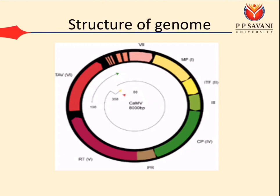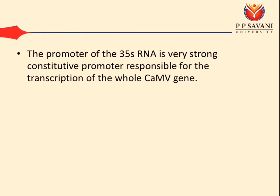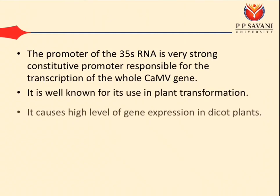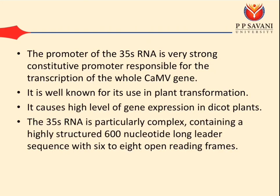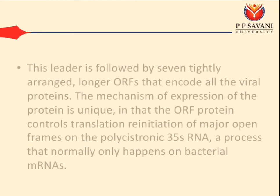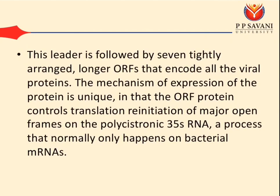Regarding genome structure, the 35S RNA promoter is a very strong constitutive promoter responsible for transcription of the whole CaMV genome. It is well known for its use in plant transformation and causes high levels of gene expression in dicot plants. The 35S RNA is particularly complex, containing a highly structured 600-nucleotide-long leader sequence with 8 to 6 open reading frames. This leader is followed by 7 tightly arranged longer ORFs that encode all viral proteins. The mechanism of expression is unique in that an ORF protein controls translation reinitiation of major open reading frames on the polycistronic 35S RNA, a process that normally only happens on bacterial mRNAs.